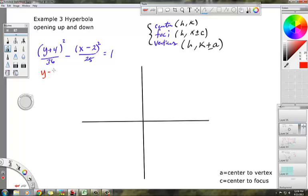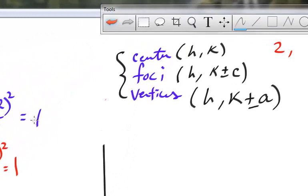That's equals right there, or minus over B squared equals 1. And when you do this, H will be 2, K will be negative 4, so there's my center right there.